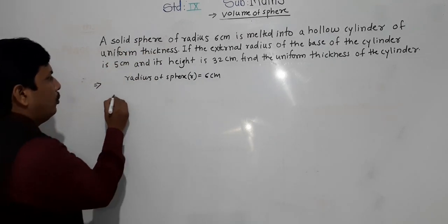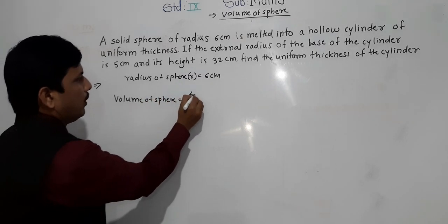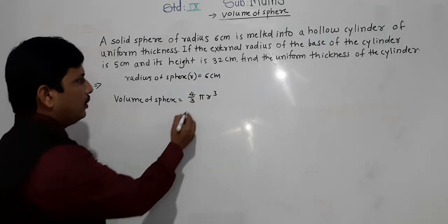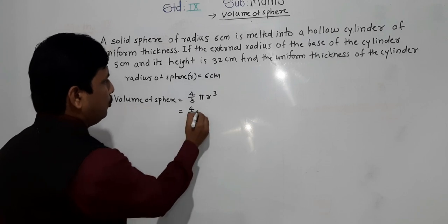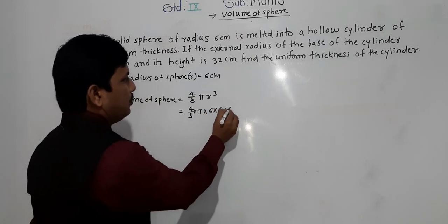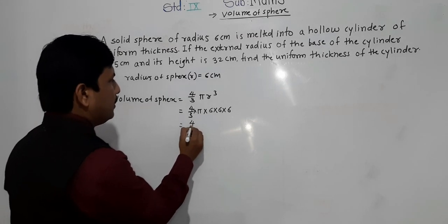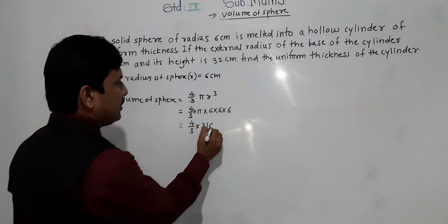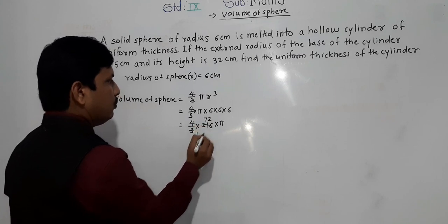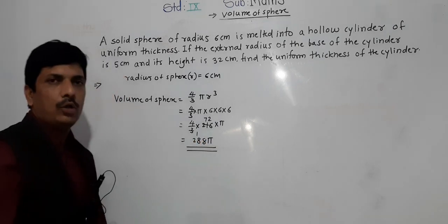Volume of sphere equals 4 by 3 into pi R cube. So here: 4 upon 3 into pi into 6 into 6 into 6. The cube of 6 is 216. Dividing 216 by 3 gives 72, and 4 into 72 gives 288 pi. So 288 pi is the volume of the sphere.